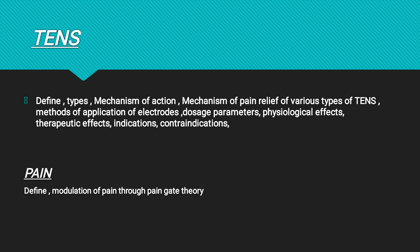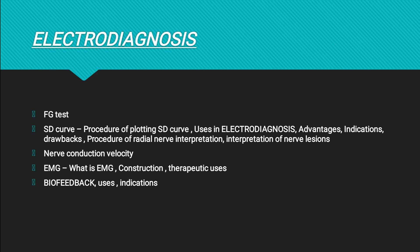Then we have dosage parameters and all these questions posted here. Moving on from TENS, we have pain — a small topic: define pain modulation through pain gate theory and methods of pain modulation. Then we have electrodiagnosis — ten marks: list various types of electrodiagnosis and explain any five. We have the FG test and SD curve. SD curve is a very important topic from an exam point of view and also for diagnostic purposes for nerve-related injuries.